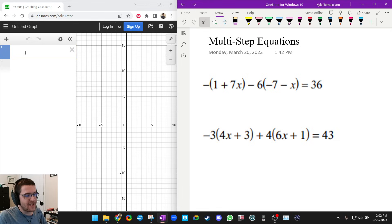So this really shines when you have these long multi-step linear equations. So watch. All I'm going to do is type in the equation. So I'm going to do the first one: negative 1 plus 7x minus 6, negative 7 minus x equals 36.